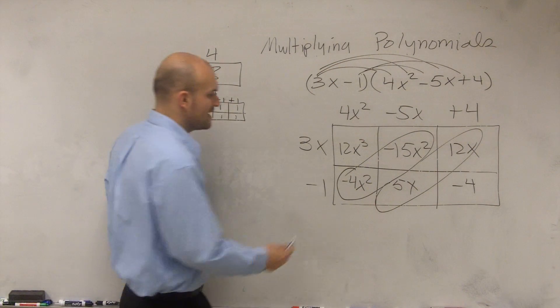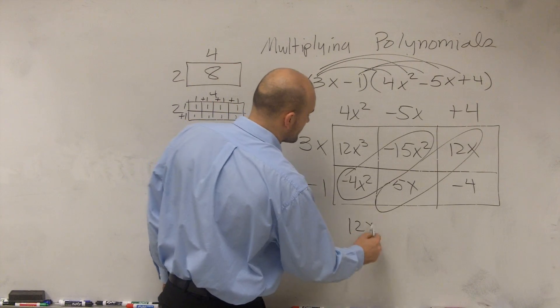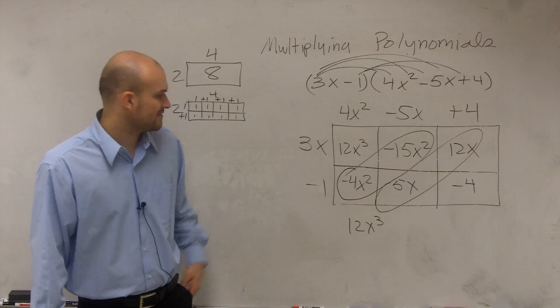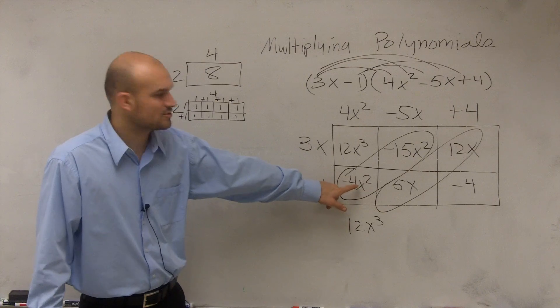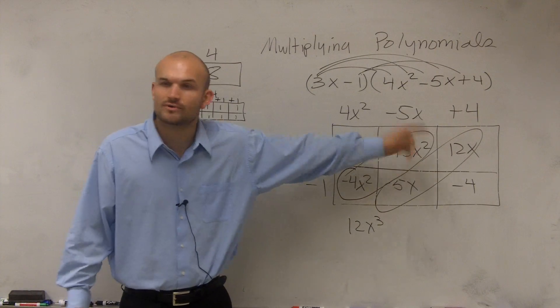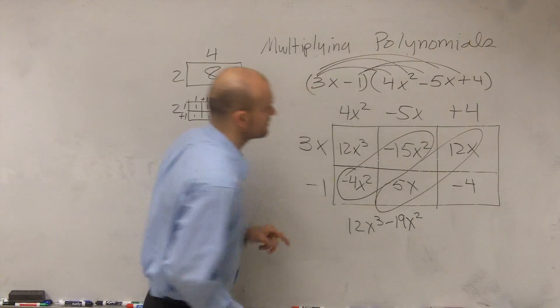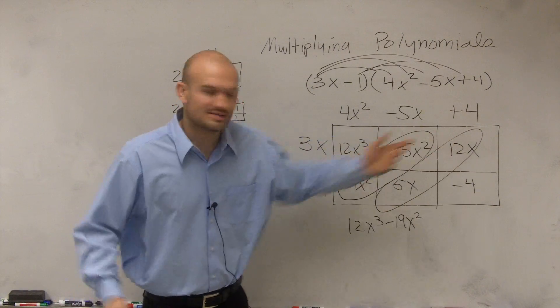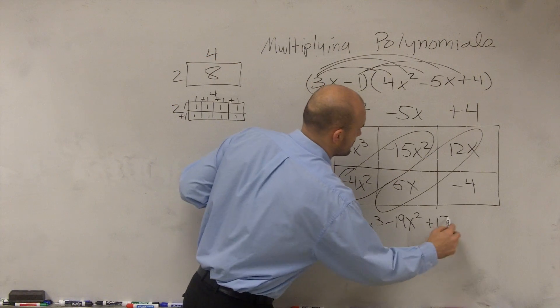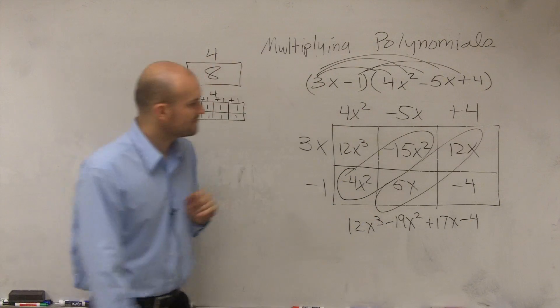So when I write down my final answer, I have 12x cubed. Well, how many x squareds do I have? I really have negative 4x squared minus 15x squared. So that's going to be a negative 19x squared, 5x plus 12x is 17x, and then my last box is minus 4.